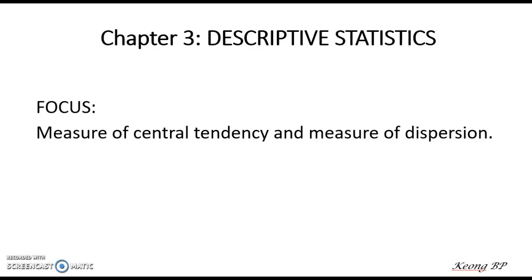The main focus of this chapter is on the measures of central tendency and measures of dispersion. What is meant by measures of central tendency is basically the measures of mode, median, and mean. In this chapter we will look at the conventional way of calculating mode, median, and mean, as well as how to calculate it using computer software, which is SPSS.